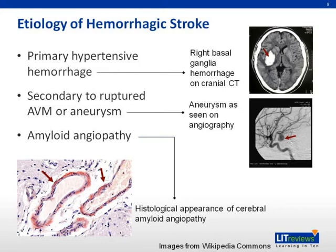Arteriovenous malformations are abnormal connections between arteries and veins and are usually congenital. They can rupture causing cerebral hemorrhage, which is usually lobar and tends to affect younger individuals. Other etiologies of hemorrhagic stroke are vasculopathies like amyloid angiopathy, which are more common among the elderly, and the intracerebral hemorrhage in these cases is usually located more superficially in the lobar regions of the brain.